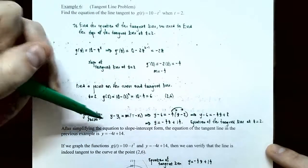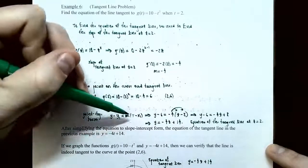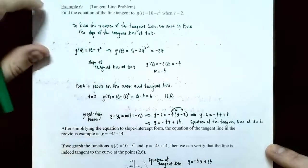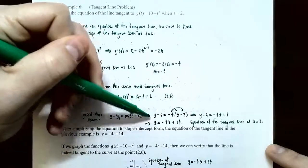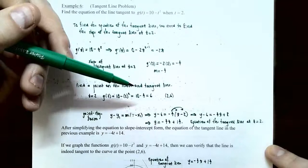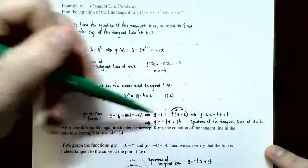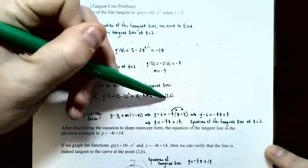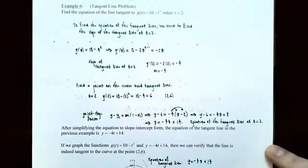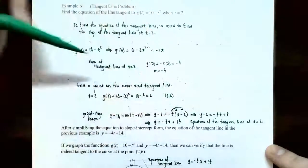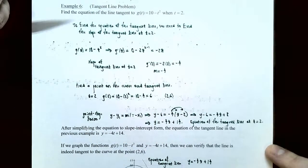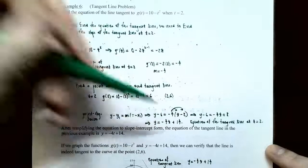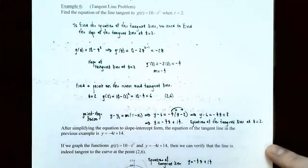Using point-slope form — y minus y1 equals slope times (t minus x1) — with point (2, 6) and slope negative 4: y minus 6 equals negative 4 times (t minus 2). Distribute negative 4: negative 4t plus 8. Then solve for y by adding 6 to both sides: y equals negative 4t plus 14. This is the equation of the tangent line at t equals 2.